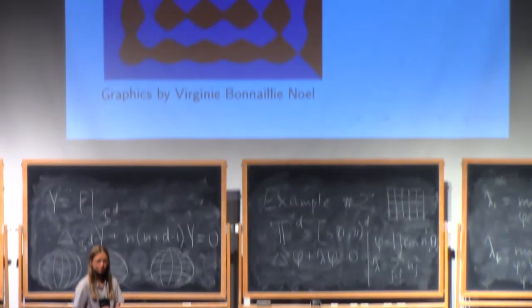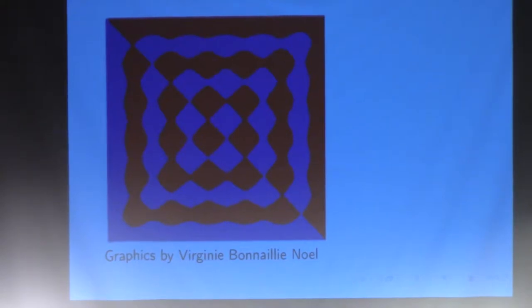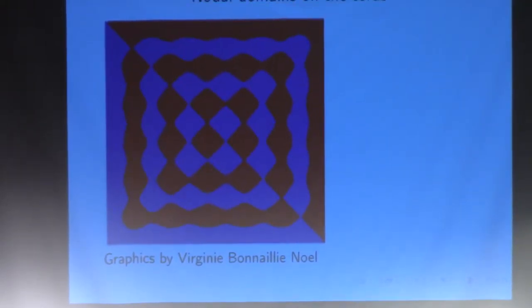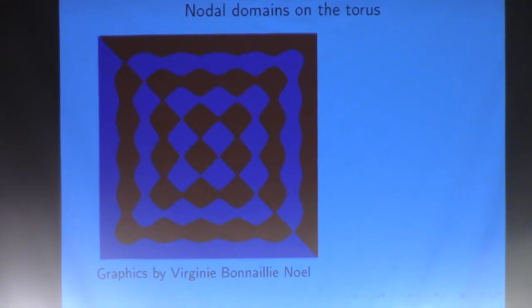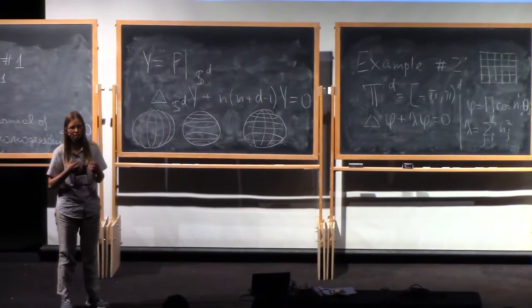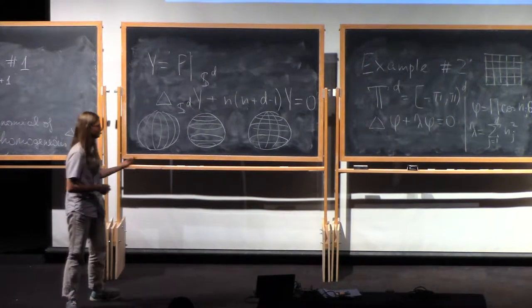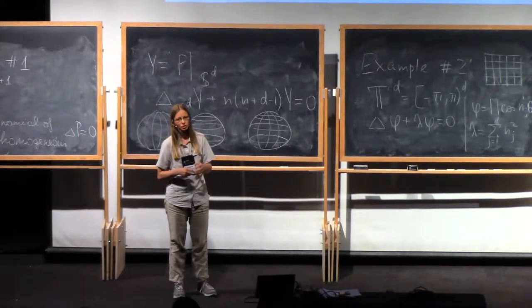The number of nodal domains is bounded by the number of this eigenvalue in the list by Courant nodal domain theorem. But on the other hand, it could be very small. It could be two. Same is true on the sphere. I don't have a nice picture, but it's a very old result that there are eigenfunctions of high frequency, large eigenvalue on the sphere with just two nodal domains.